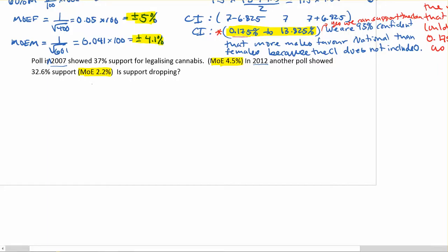So our first step again is going to be to find our difference. And in this case, it's going to be between the 2007 and 2012 results. So we have 37 minus 32.6, and for that we get 4.4%. Okay, so that's our difference.